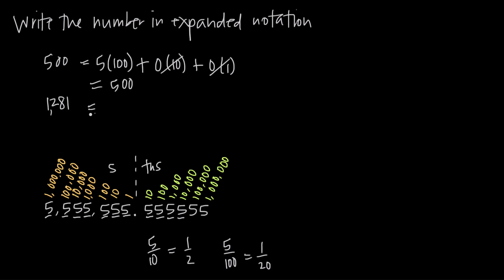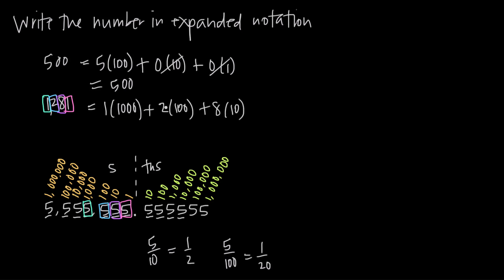We can do the same thing to write 1,281 in expanded notation. We just need to realize that we have a one in the thousands place, a two in the hundreds place, an eight in the tens place, and a one in the ones place. We multiply each of these numbers by its place value: one times 1,000, plus two times 100, plus eight times 10, plus one times 1. And this is expanded notation.